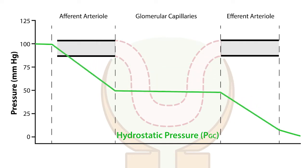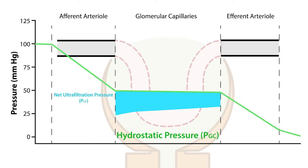The net ultrafiltration pressure determines glomerular filtration rate, and that net ultrafiltration pressure equals the difference between net hydrostatic pressure and net oncotic pressure.